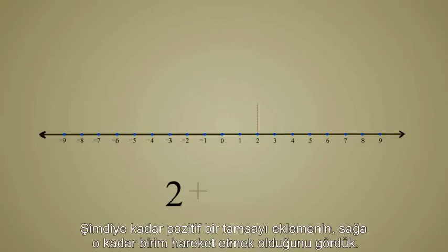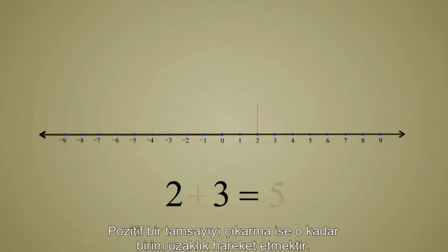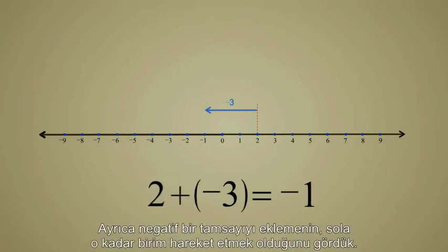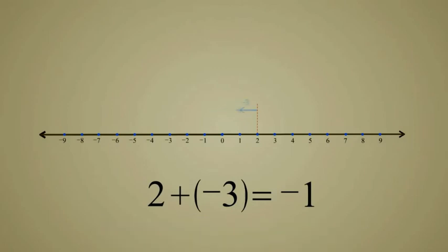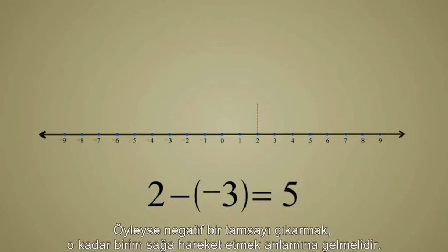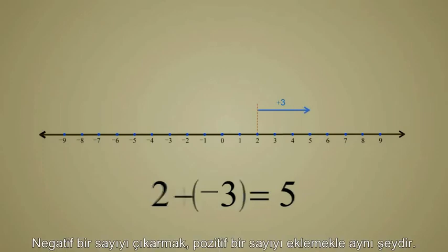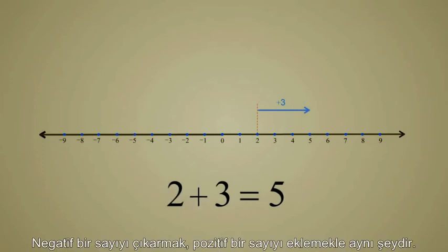So far, we have seen that adding a positive integer means moving that number of units to the right, and subtracting a positive integer means moving that number of units in the opposite direction. We have also seen that adding a negative integer means moving that number of units to the left. So subtracting a negative integer must mean to move that number of units to the right. Subtracting a negative number is the same as adding a positive number.